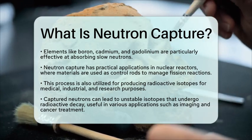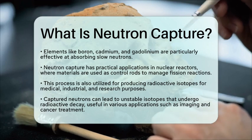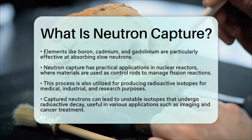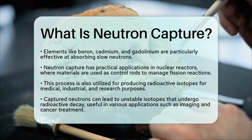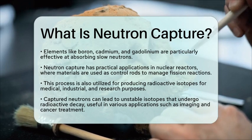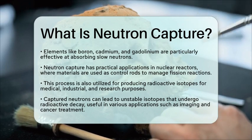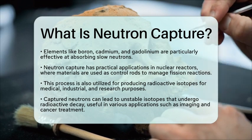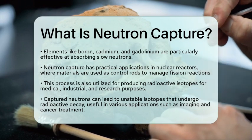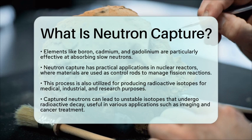In essence, neutron capture is a nuclear reaction where a nucleus absorbs a neutron and emits gamma radiation, resulting in a new isotope. The discovery of the neutron was essential to understanding this process, which plays a vital role in nuclear physics, reactor technology, and isotope production.